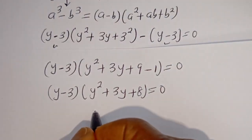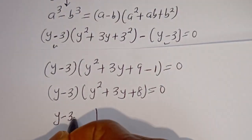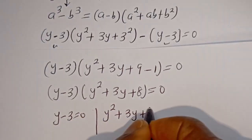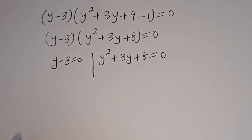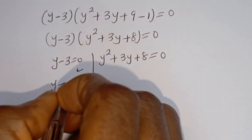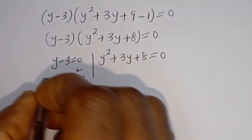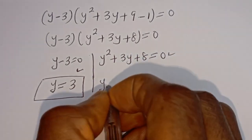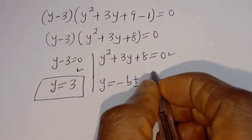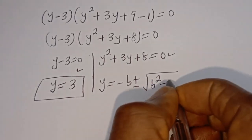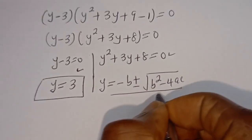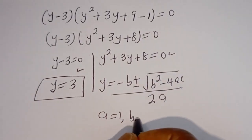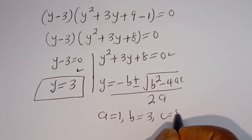There are two cases here. The first case is y minus 3 is equal to zero, so y is equal to 3. From the second factor, y squared plus 3y plus 8 is equal to zero — this is a quadratic equation. Let's solve this using the quadratic formula: y equals minus b plus or minus square root of b squared minus 4AC, over 2A. From this equation, A equals 1, B equals 3, C equals 8.